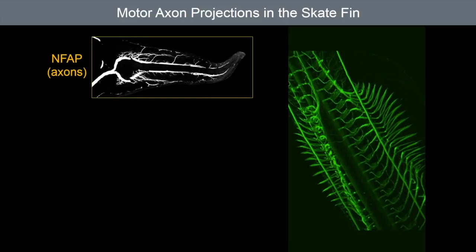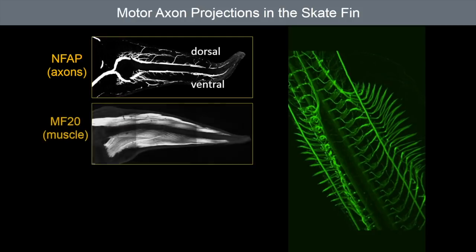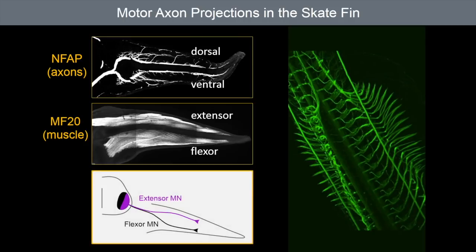In addition, we found that the initial pattern of motor neuron connections to muscles is very similar to those of land vertebrates. Here you can see in a section through the skate fin that the axons of motor neurons separate into dorsal and ventral branches. The dorsal branch innervates muscles involved in fin extension while the ventral branch innervates flexor muscles. This pattern is similar to those of land vertebrates.